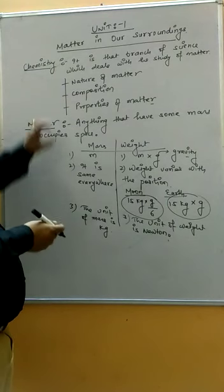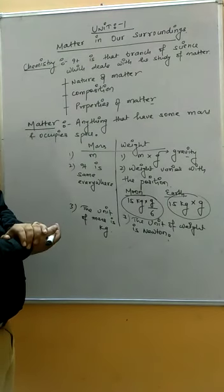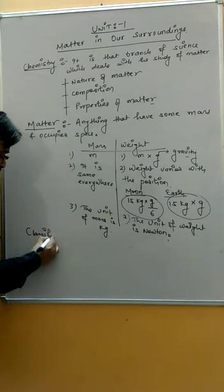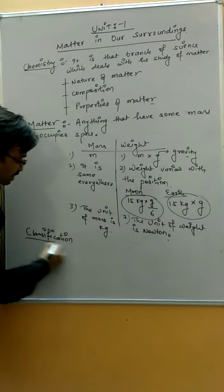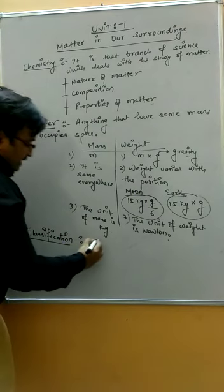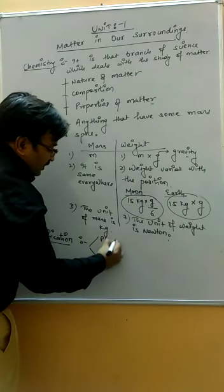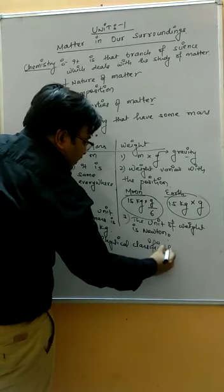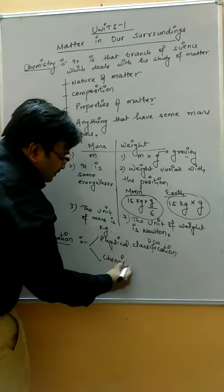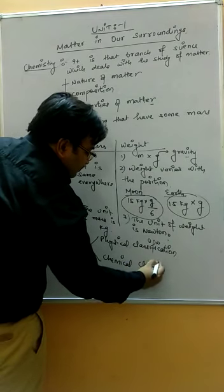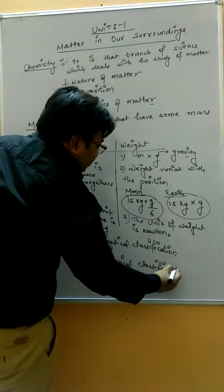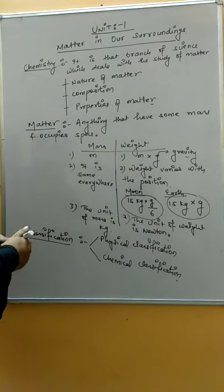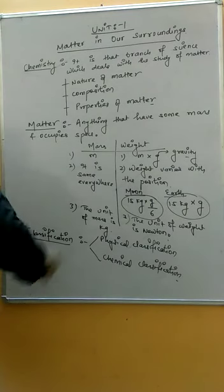So, matter is anything that has mass and occupies space. Now the second question that arises is the classification of matter. Matter can be classified in two ways: one is physical classification and the other is chemical classification. In the next slide, we discuss the classification of matter.